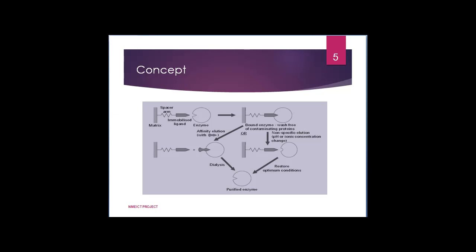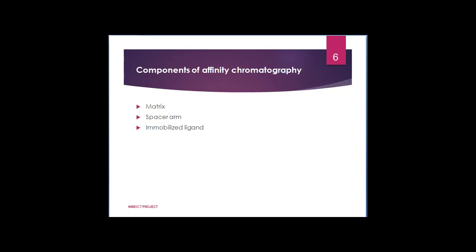In a typical affinity chromatographic technique, matrices, spacer arm, and immobilized ligand are the three main components present in the column. We will discuss the properties of matrices, spacer arm, and ligand one by one.